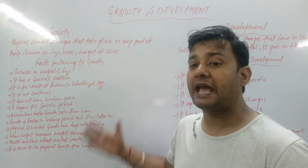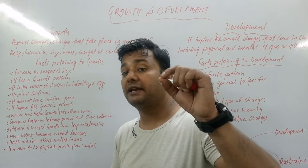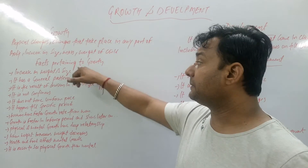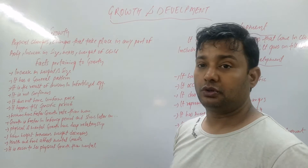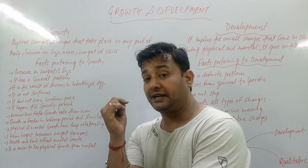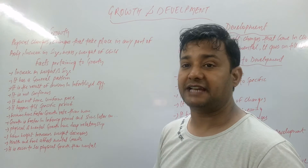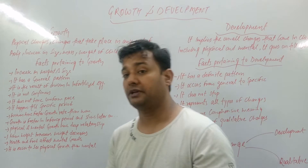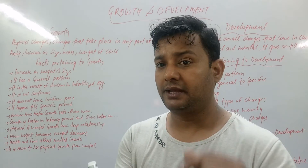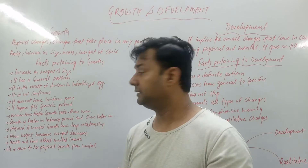Now, some points we need to keep in mind that we have to explain in a paper so that we can get good marks. The first fact pertaining to growth: increase in weight and size. When children start growing from small to big, their weight and size both increase — that symbolizes growth is going on in a proper manner.